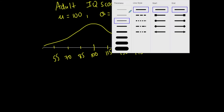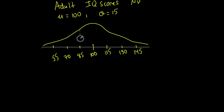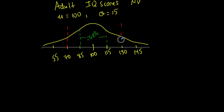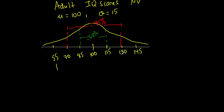Now let's apply the percentages. Between 85 and 115 — one standard deviation below and above the mean — approximately 68% of all IQ scores lie there. Between 70 and 130 — two standard deviations of the mean — approximately 95% of all IQ scores lie there. Between 55 and 145 — three standard deviations of the mean — approximately 99.7% of all IQ scores lie between those values.